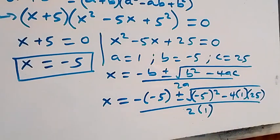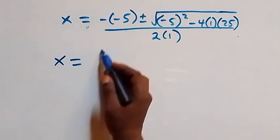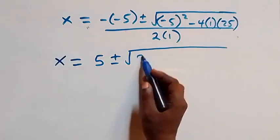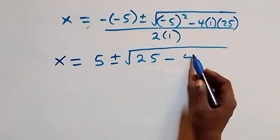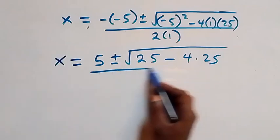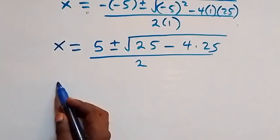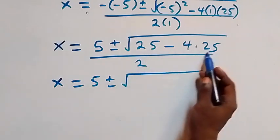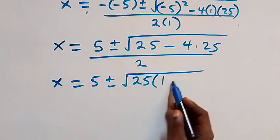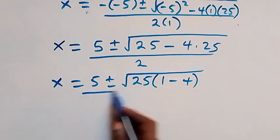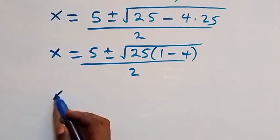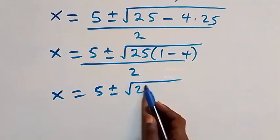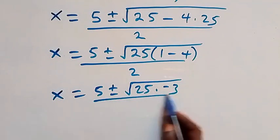This simplifies to x equals 5 plus or minus square root of 25 minus 4 times 25, over 2. We factor out 25 from under the radical, leaving 1 minus 4 inside, so x equals 5 plus or minus square root of 25 times negative 3, over 2.